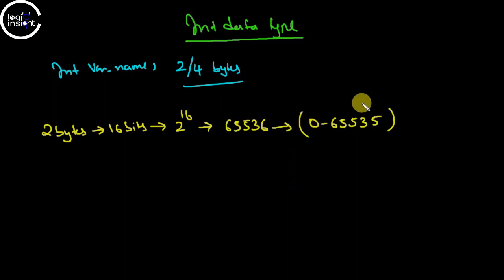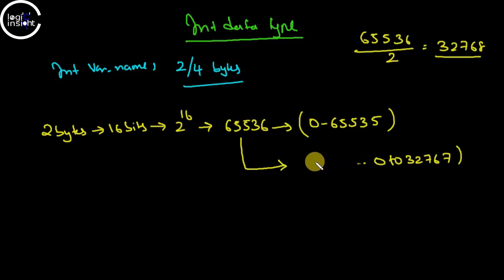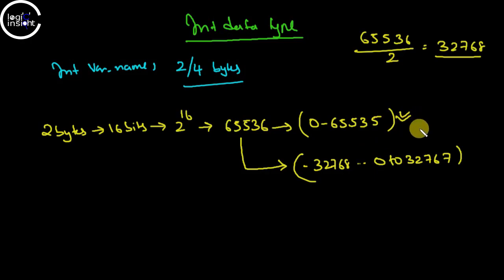This is the range for an unsigned system. For a signed system, this value is divided in half. The positive range starts from 0 to 32,767, and negative values go up to -32,768. The total capacity is the same, but in an unsigned system we store only positive values, while in a signed system we store both positive and negative — so the range is divided in half for each side.